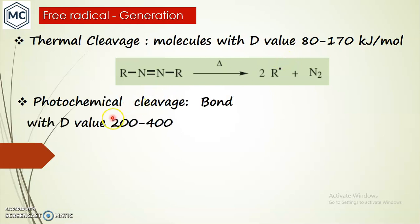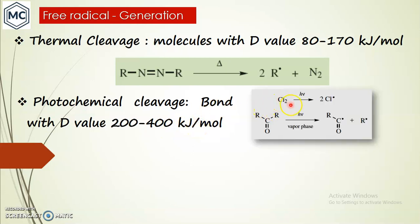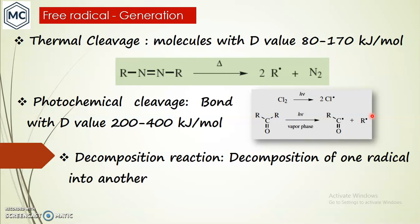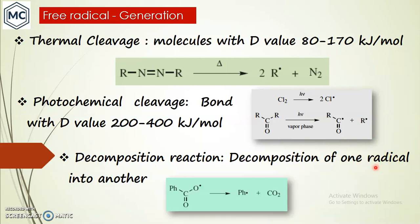The second method is photochemical cleavage. Molecules with a bond dissociation energy value between 200 to 400 kcal per mole undergo photochemical bond cleavage. An example is the dissociation of chlorine into chlorine radicals, and a ketone into a carbonyl radical and an alkyl radical. The third method is decomposition reaction — an already-formed radical can decompose into another radical by releasing carbon dioxide.